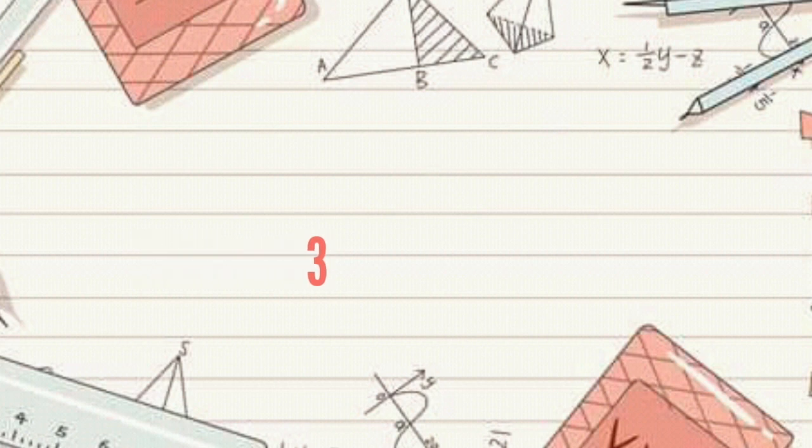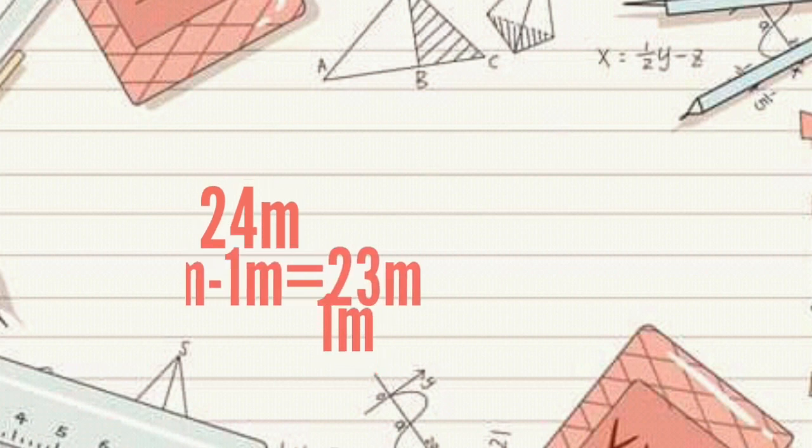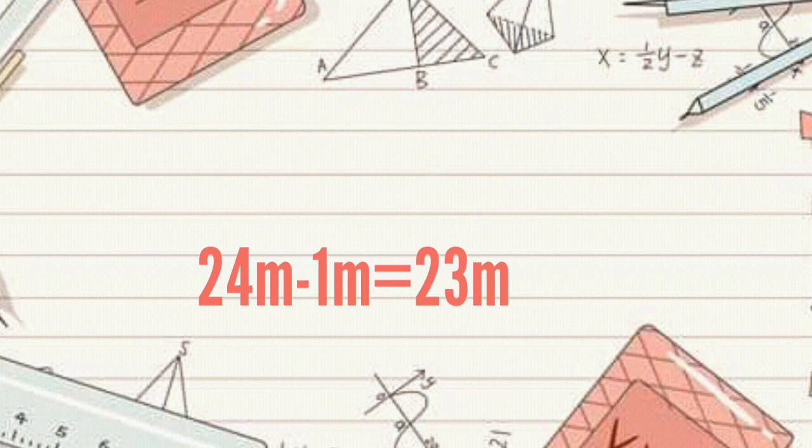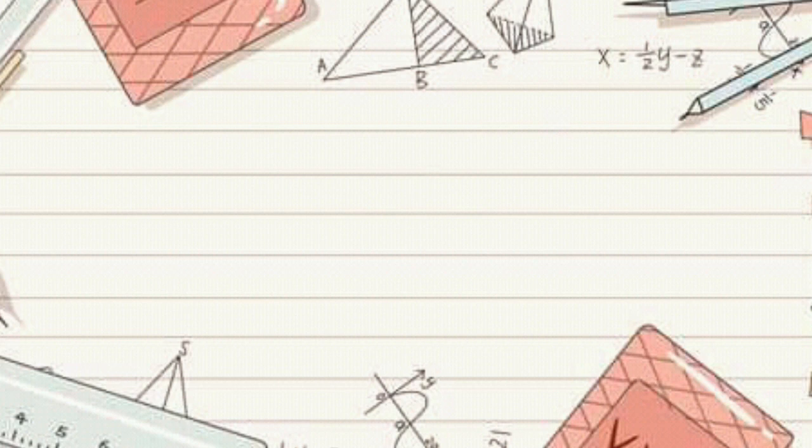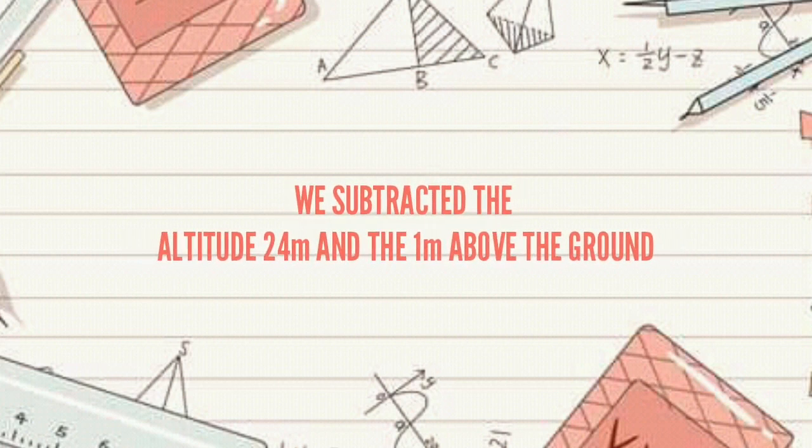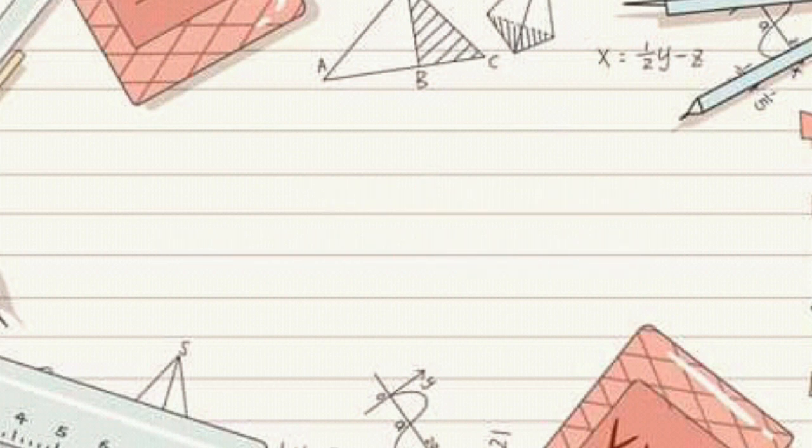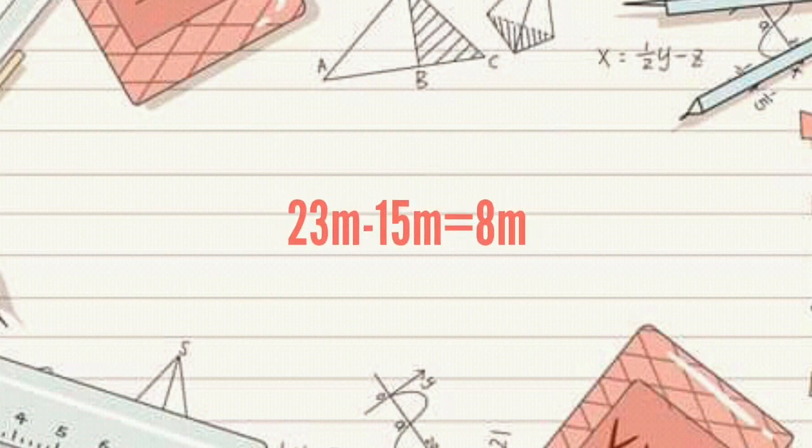Since we are now given that the altitude of the ferris wheel is 24 meters and we are 1 meter above the ground, thus 24 - 1 = 23. So, the altitude of the ferris wheel is 23 meters from the lowest point of the ferris wheel. We subtract the altitude 24 meters and the 1 meter above the ground. Now, to find the value of y²,